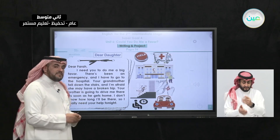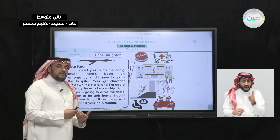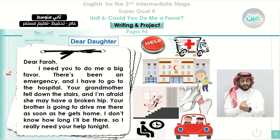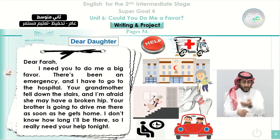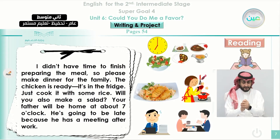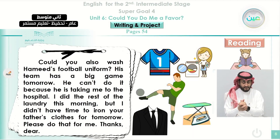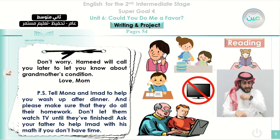We applied that on a message written by a mother to her daughter. If you still remember from the previous lesson, she started saying 'Dear Farah' and began to ask her daughter to do her a favor. We read them in four or five notes. As you can see here, this is the first paragraph of the writing, and here is the second. She is giving her some instructions about the daily chores that Farah has to do instead of her mother. Here is the third paragraph — she told her to wash her brother's clothes and also to iron her father's suit, as you can see here.